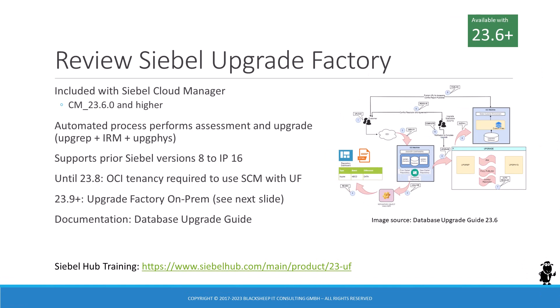In June 2023, with the 23.6 update of Siebel Cloud Manager, Oracle introduced the Siebel Upgrade Factory — an orchestration facility that automates most steps of a Siebel CRM development upgrade, including a major version lift from IP16 or prior to the current Siebel CRM version. Until 23.8, the Upgrade Factory was only available as part of SCM and thus required an Oracle Cloud Infrastructure tenancy, and was also limited to Oracle Linux and Oracle Database. With 23.9 and higher, Oracle provides a similar experience for on-prem environments.